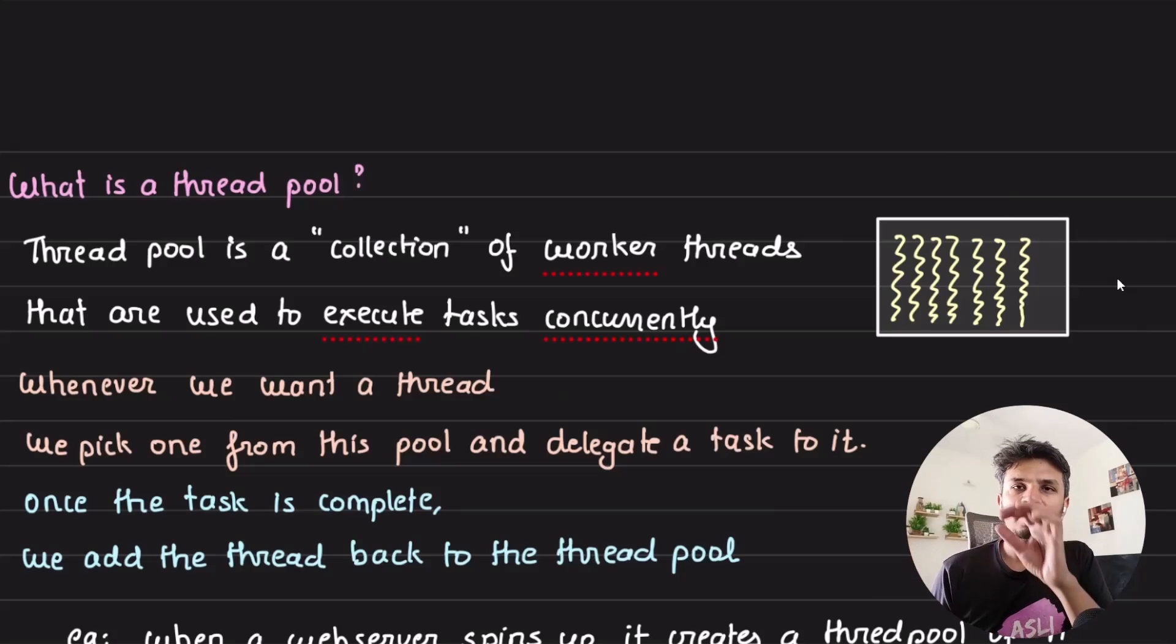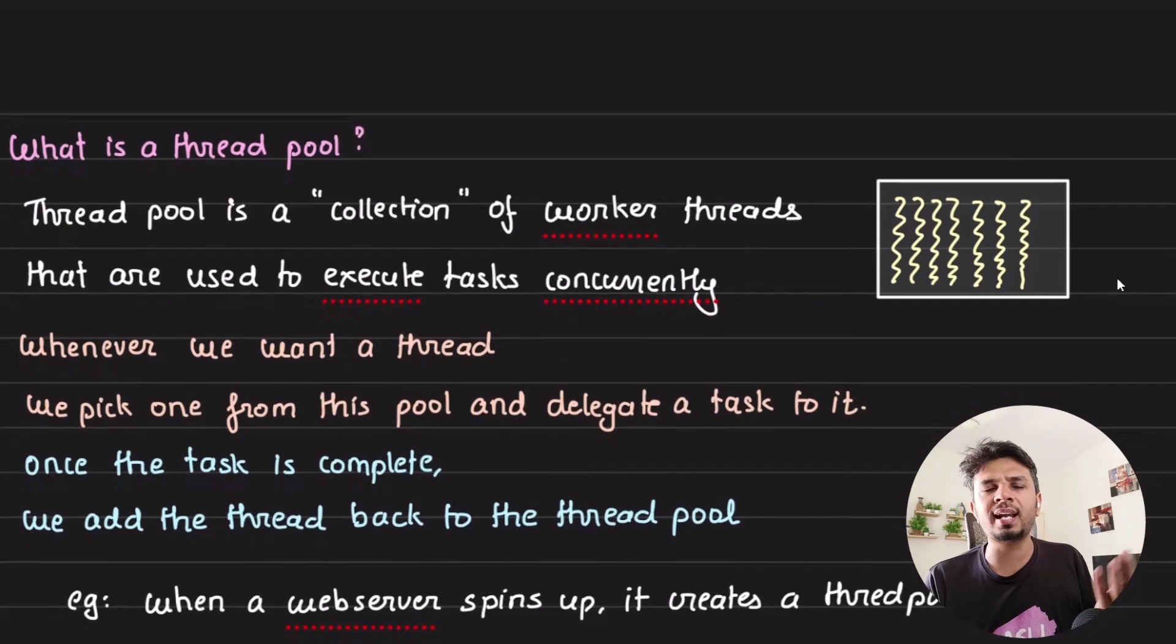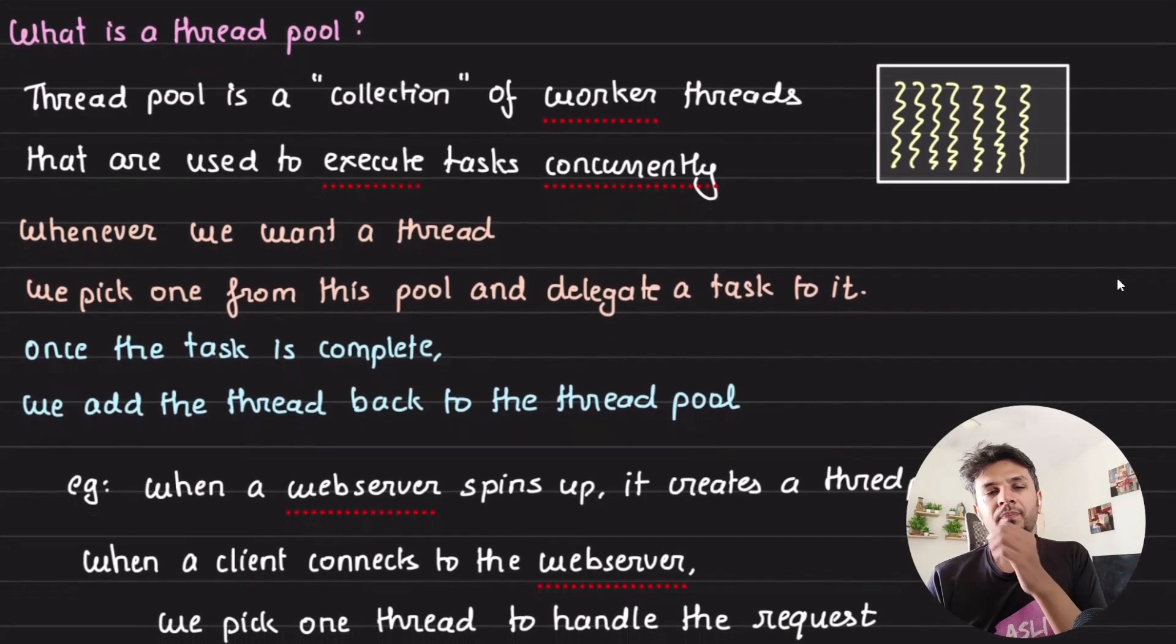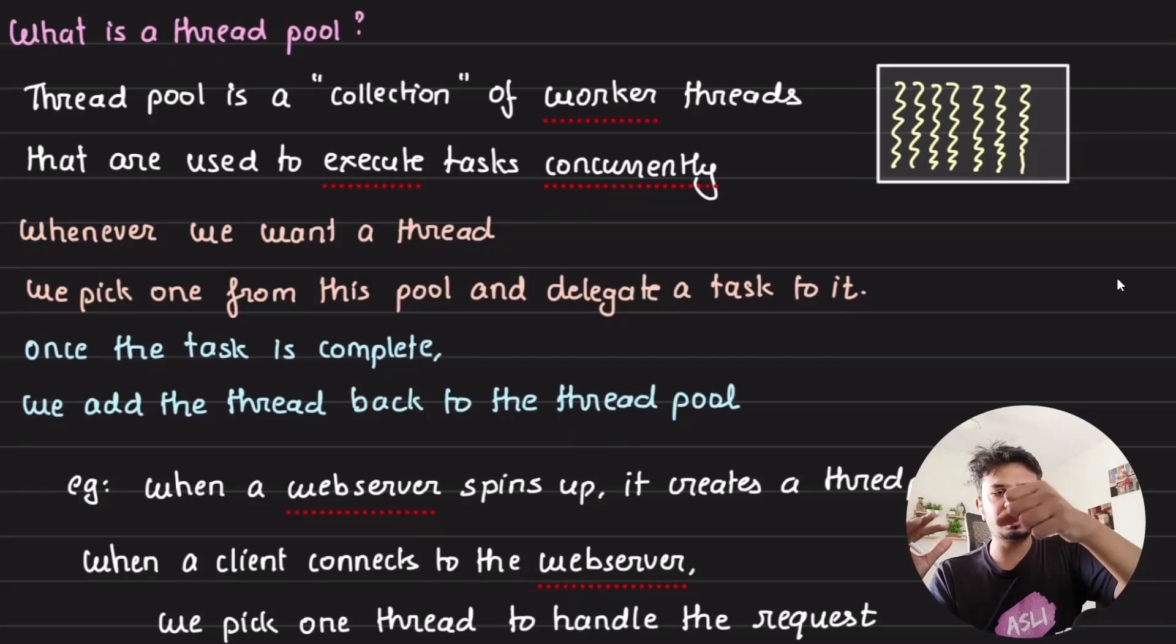You use it, delegate a task to it, and once it's done you add the thread back to the pool. You can use a pretty standard concurrent blocking queue to implement this. The core idea is that you save the cost of spinning up a new thread every time.